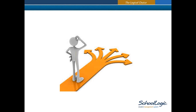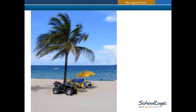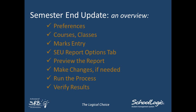Choices are what we're going to spend most of our time talking about today. The semester end update is like many of the more involved processes in our software — the actual process itself is somewhat anticlimactic, at least if you make the right choices along the way. The choices you make leading up to that final process are the big deal. If we get the choices right, the semester end update process will go swimmingly. All of your first term grades will copy smoothly into history.